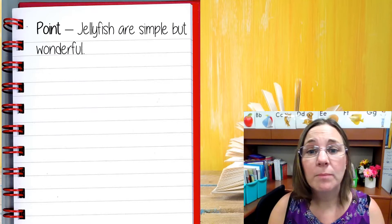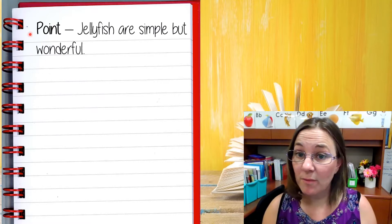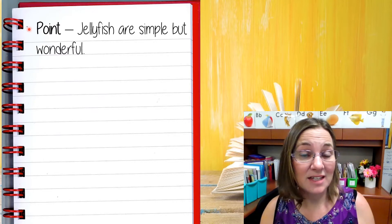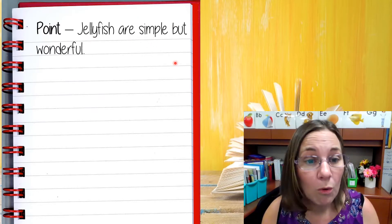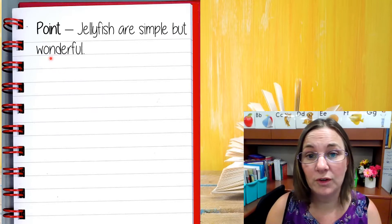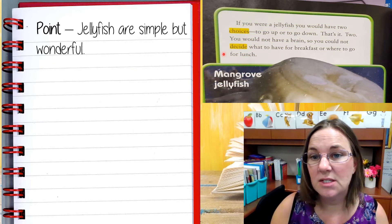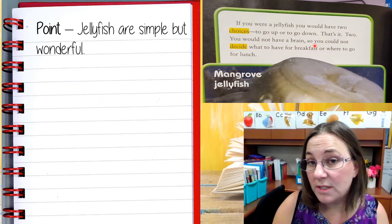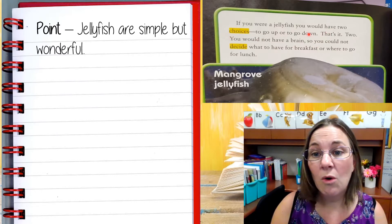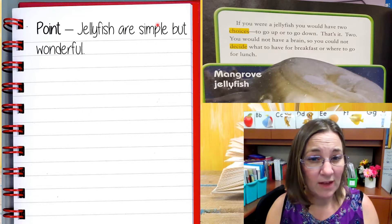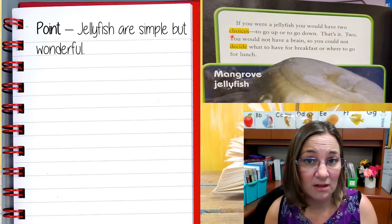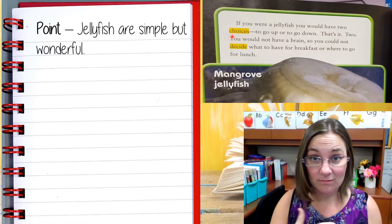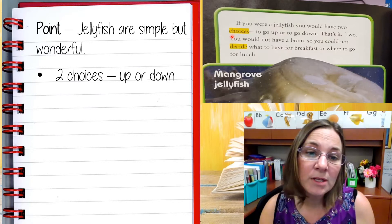In the text we just read, the author's point is that jellyfish are simple but wonderful. I wrote that at the top of my reader's notebook. Now I want to find reasons in the text that prove or support this — specifically reasons that show jellyfish are simple, or reasons that show jellyfish are wonderful. On the first page, one of the important details we found was that they have two choices: to go up or down. Does that reason show jellyfish are simple or wonderful? It shows they're simple — remember, simple means easy to understand or not complicated. Going up or down, and that's it — that's pretty simple. So I'm going to jot that in my reader's notebook.